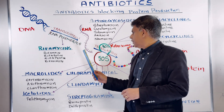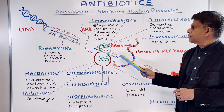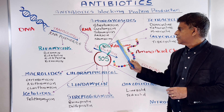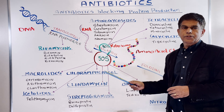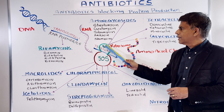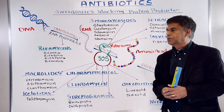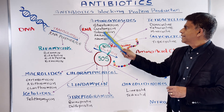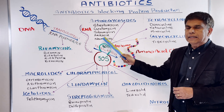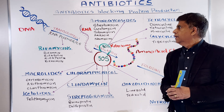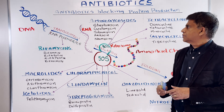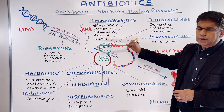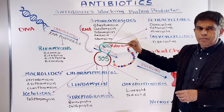The major drug activity happens at translation. Let's move to the translation process. We have a 30S subunit and a 50S subunit of the ribosome. The drugs that work on the 30S subunit include the aminoglycosides: streptomycin, gentamicin, tobramycin, amikacin, and neomycin — five drugs in the aminoglycoside category.